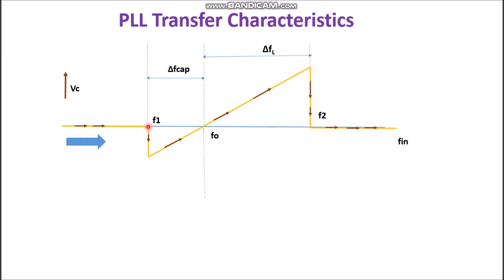At F1, the loop suddenly locks onto the input, causing a negative jump in the error voltage. So it has come into the capture range. Now when the frequency is again increased, this error voltage is decreasing as the frequency difference becomes less. And at F0, both frequencies become equal and the error voltage is zero.